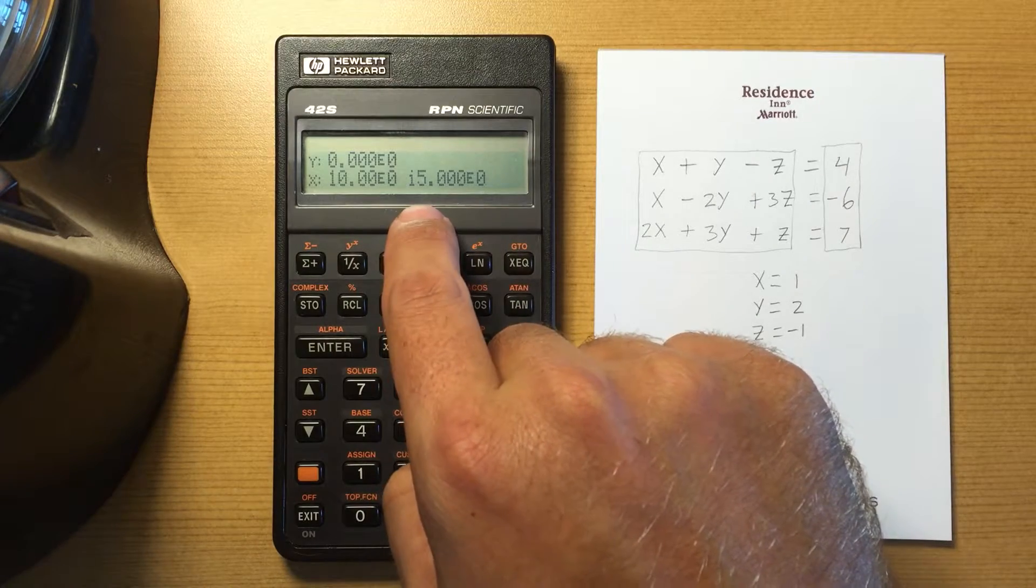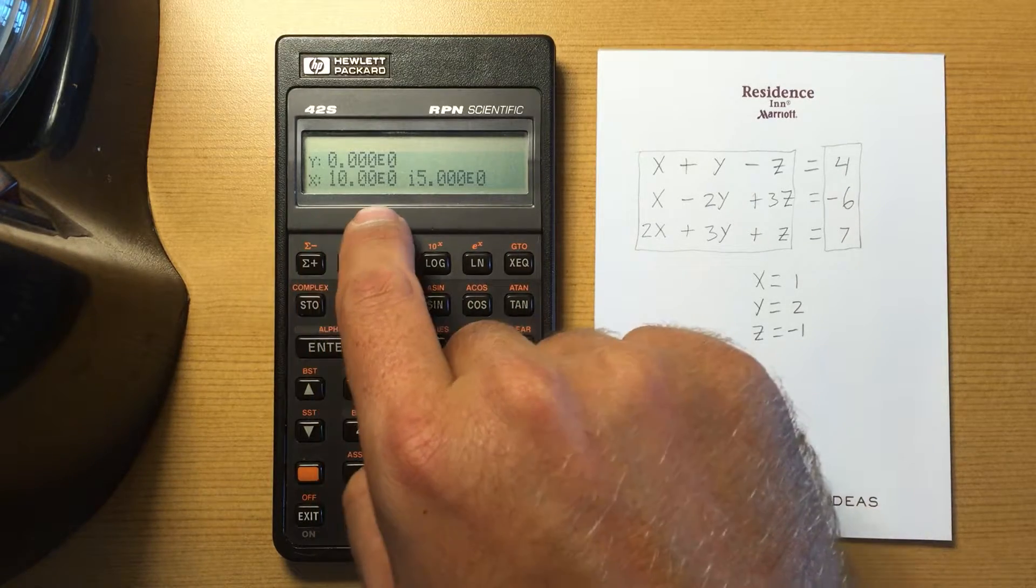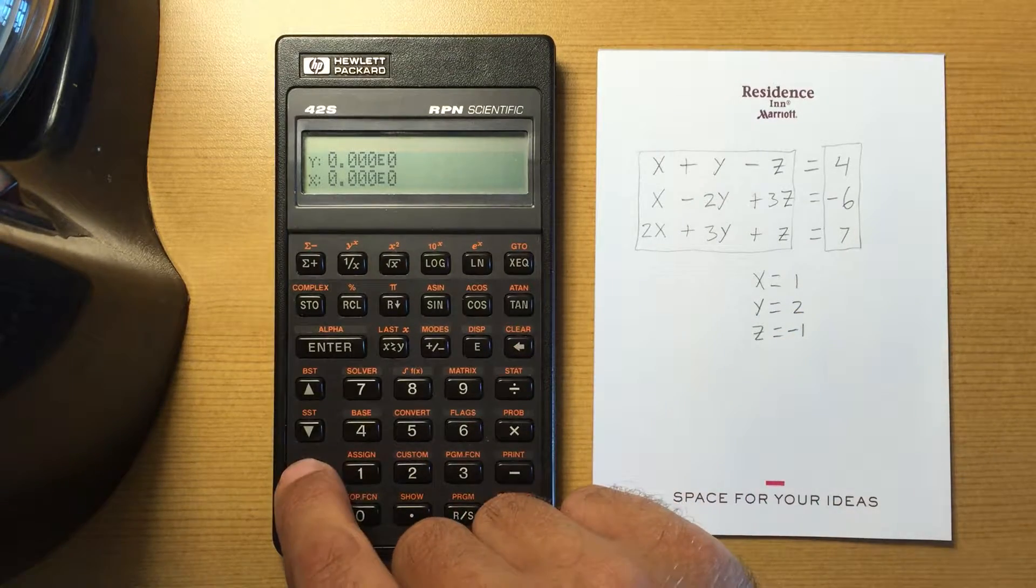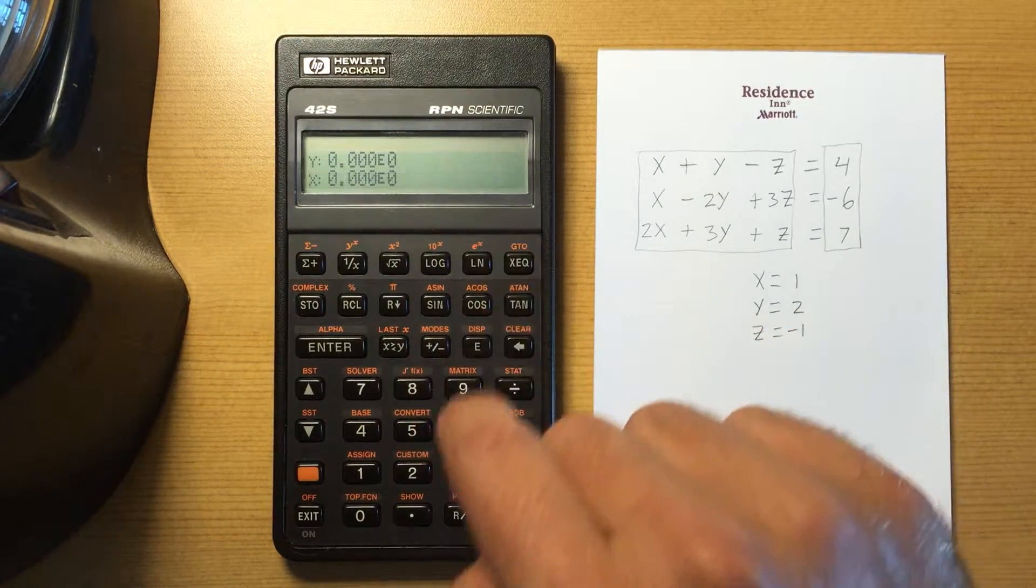If I change that mode to polar and now do the complex, I get five at angle ten, which is different.